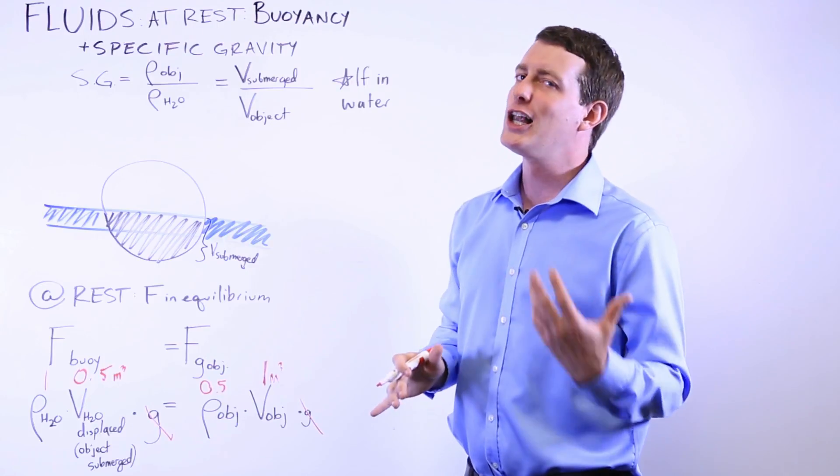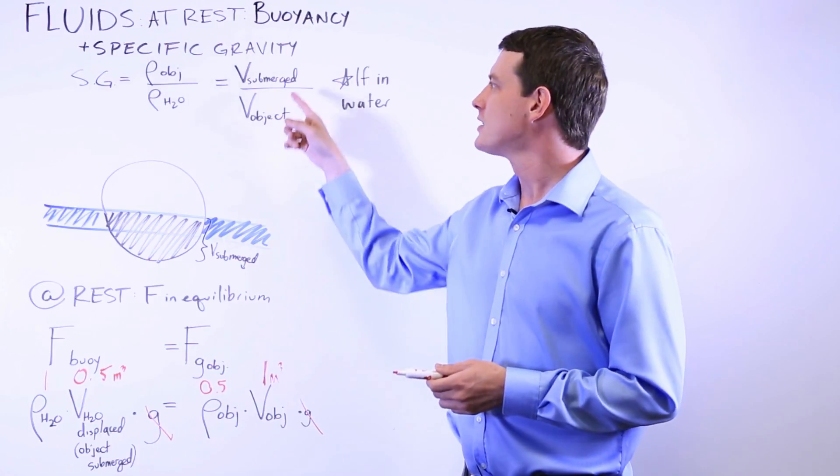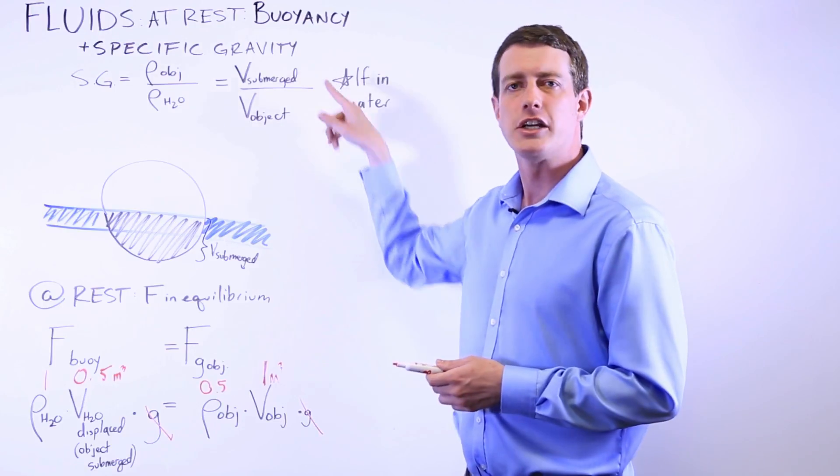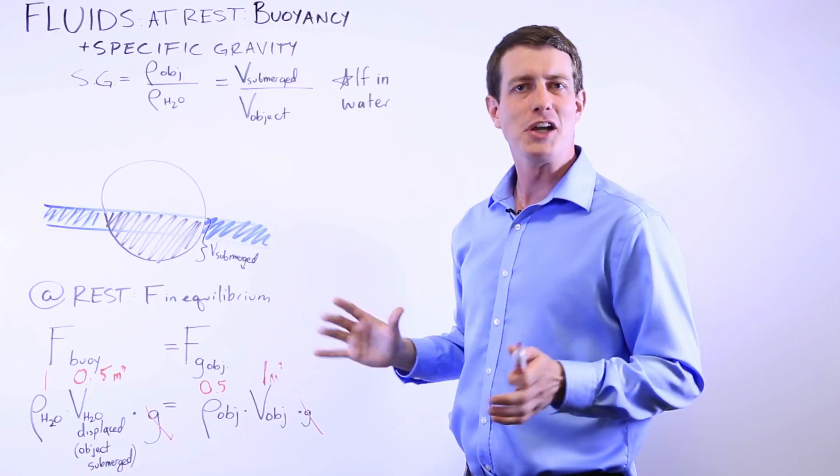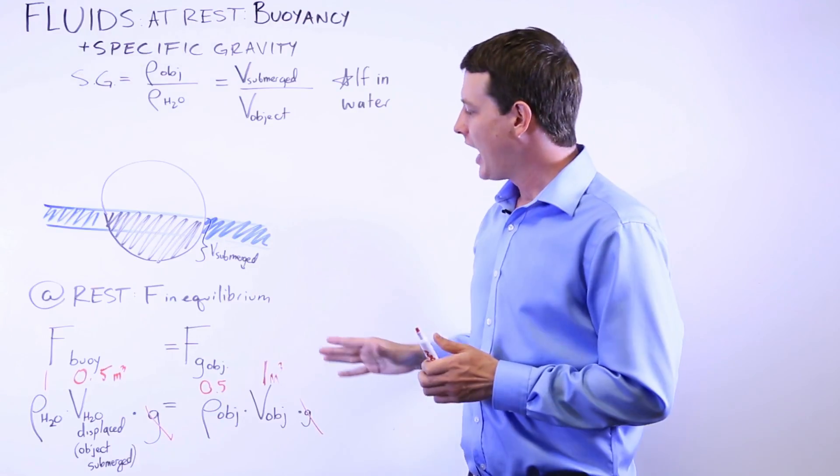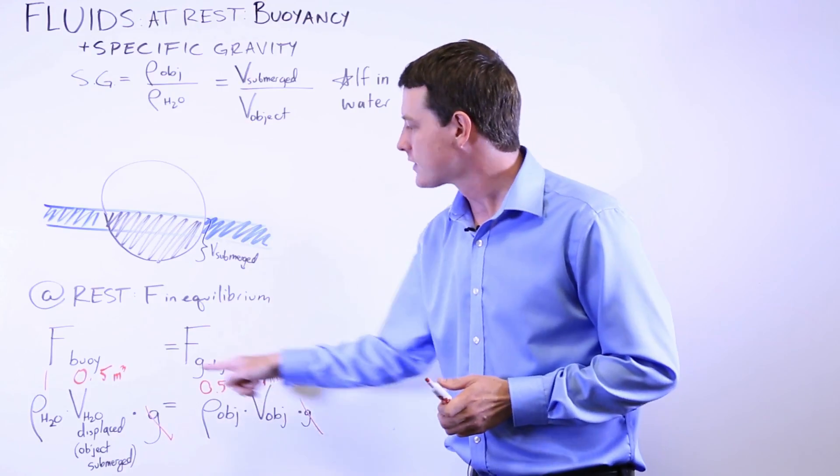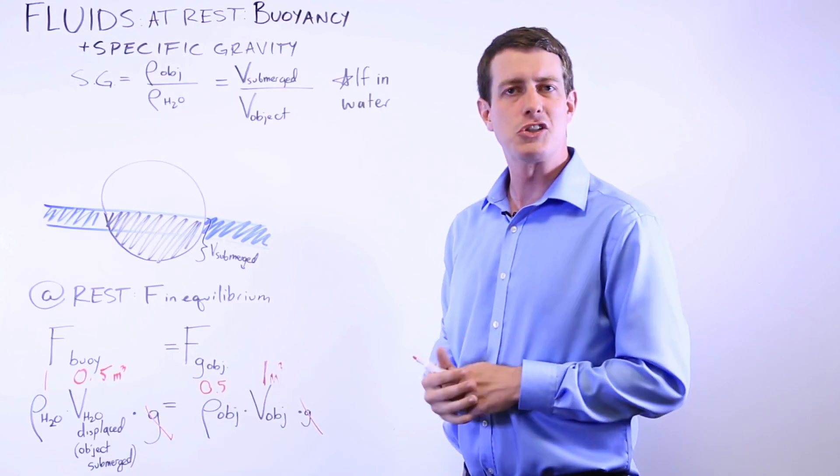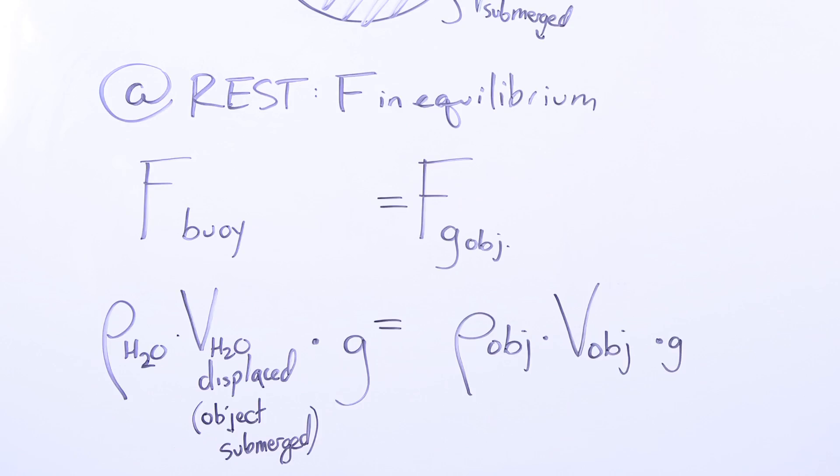But luckily for you, a lot of the buoyancy questions you'll see on the MCAT will be based in water. And so this can be a very useful relationship to go from specific gravity to these volume ratios. And you're pretty much set there as long as you understand that these are two forces in equilibrium and you're just tweaking these different variables to ensure that the equation here remains completely true.